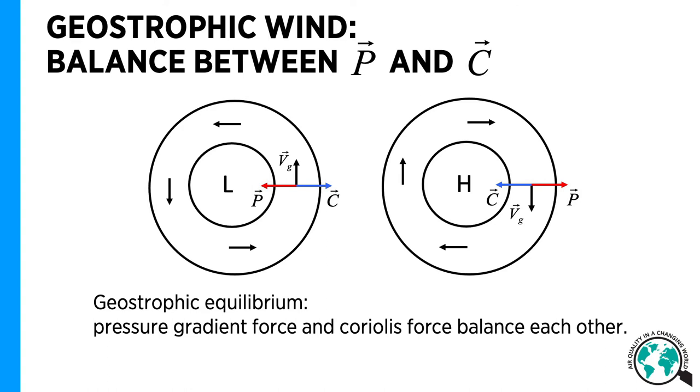In the northern hemisphere, when the air flows from the higher pressure towards the lower pressure, the Coriolis force makes it turn to the right until equilibrium is reached and these two forces balance each other. This means the air flows counterclockwise around the low pressure and clockwise around the high pressure. This is called the geostrophic wind.